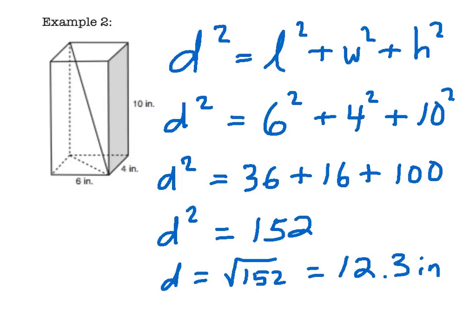So that's how we find the length of a diagonal in a rectangular prism.